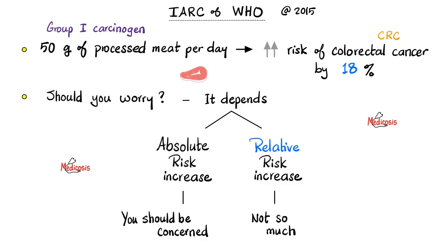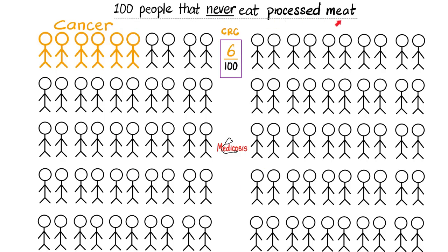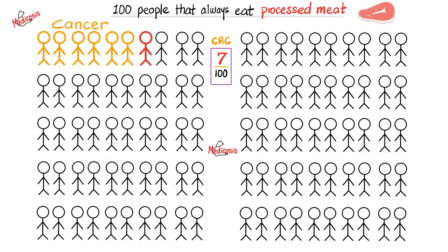The second mistake that the news media fell for is confusing absolute risk with relative risk. If this 18% rise was an absolute risk increase, then of course you should be concerned. But this is not an absolute risk increase — this was a relative risk increase. To belabor the point: let's draw 100 persons that never eat processed meat, and say we expect 6 cases of colorectal cancer out of these 100 individuals. Now let's take 100 persons that are regular eaters of processed meat — we will expect 7 cases of colorectal cancer. 1 is about 18% of 6, and that's where the 18% relative risk increase came from.